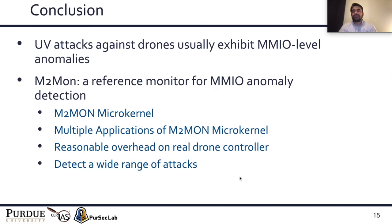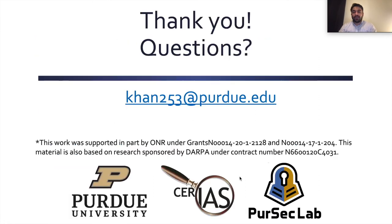To conclude, in this paper we showed that UV attacks against drones usually exhibit MMIO-level anomalies. To detect these anomalies, we implemented the M2Mon microkernel and multiple applications on top of it. We showed that on a real drone controller, the M2Mon microkernel incurs a reasonable overhead, and using the applications and the microkernel, we are able to detect a wide range of attacks. Thank you all for listening, and I'll be happy to take any questions.